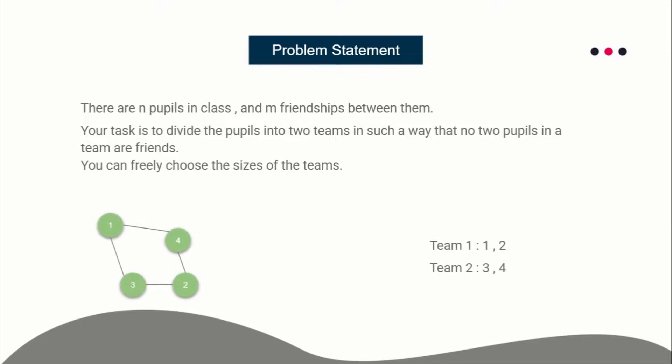This was the relationship graph, so what I can do is divide one and two in the same team while three and four in the other team. So you can see no two students are there in a team so that there is a relation between them.